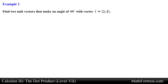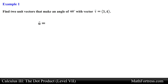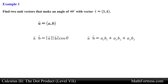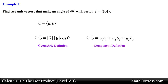Find two unit vectors that make an angle of 60 degrees with vector V. We are given a planar vector and asked to find two unit vectors that make an angle of 60 degrees with it. Let's represent the unit vector u in component form by assigning variables a and b for the x and y components respectively. We need to set up various relations between the vectors to find the components of unit vector u.